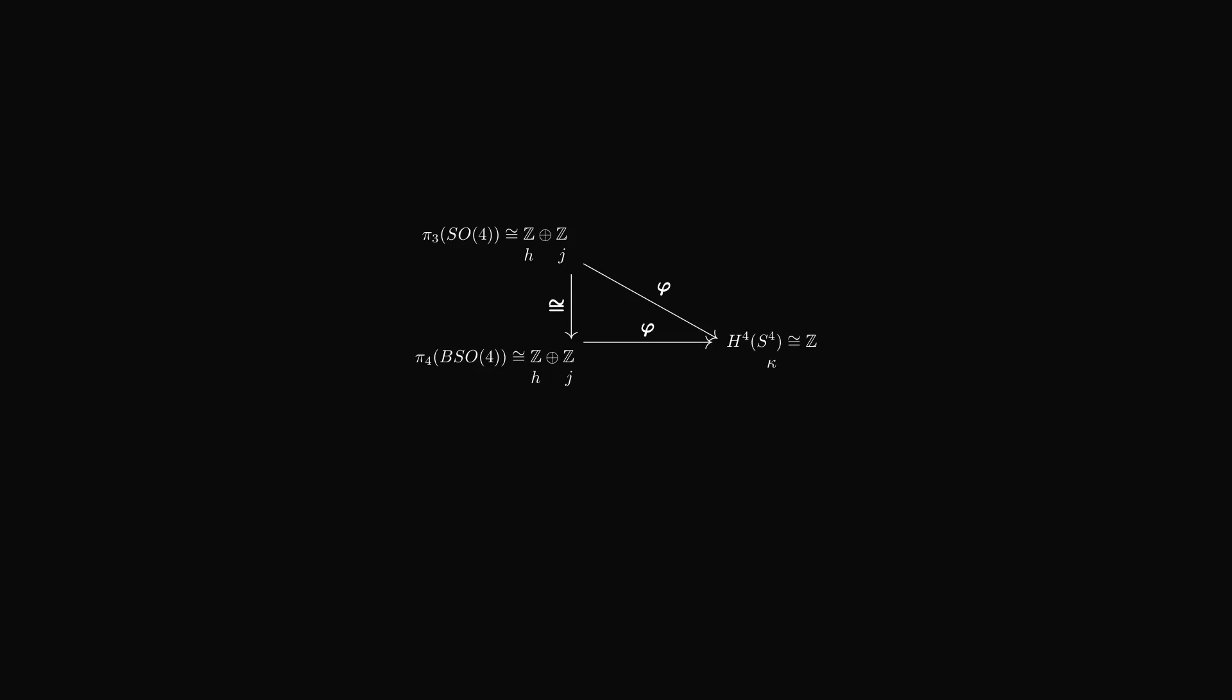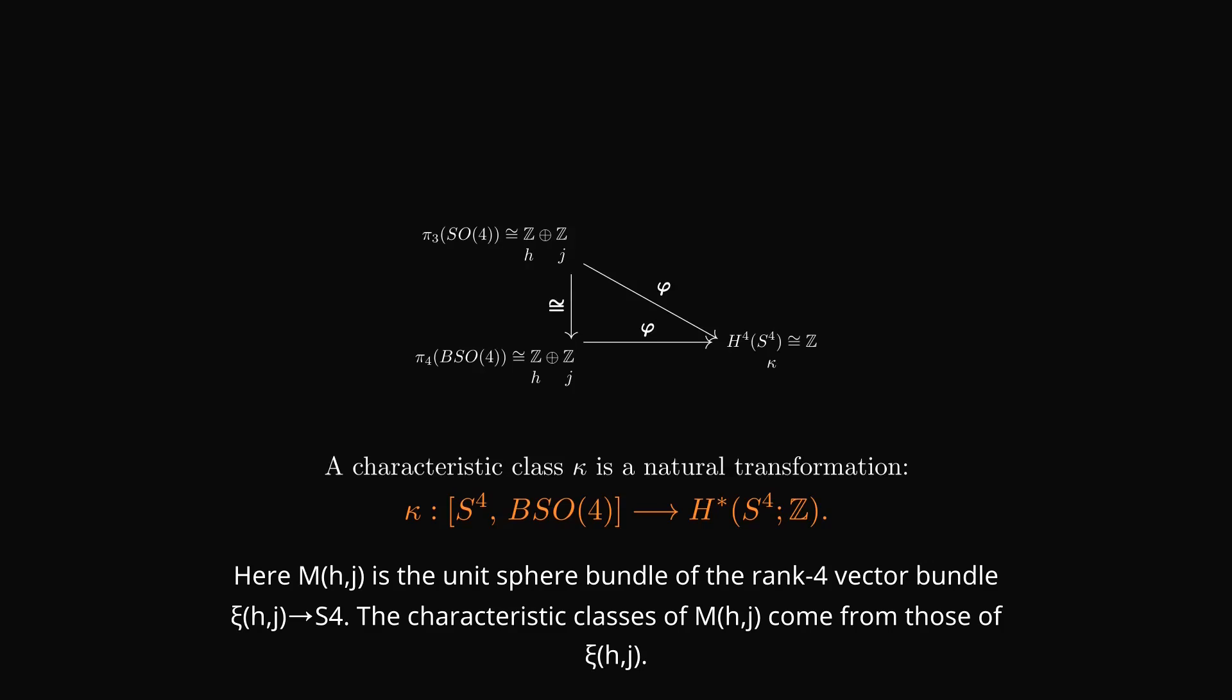Based on this information, we can now compute certain topological quantities that are uniquely determined by the bundle named characteristic classes. For example, the Euler class depends on 1 minus H plus J, and the Pontryagin class depends on 2 times H minus J. But these invariants are not enough to distinguish smooth structures.